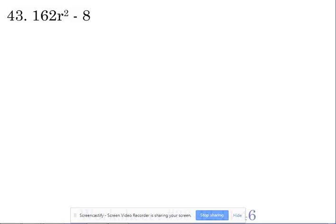Let's also look at problem number 43. Problem number 43 is 162R squared minus 8. We've got two terms, we have a minus sign in between them, but 162 and 8 are not on my list of perfect squares. They're not up there.